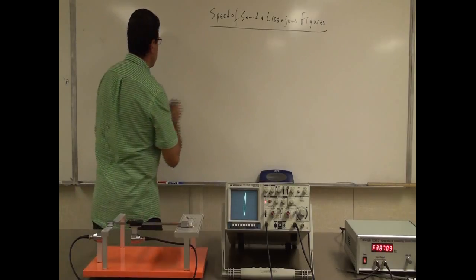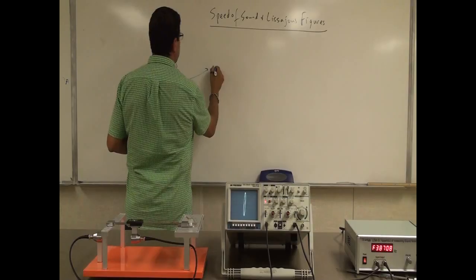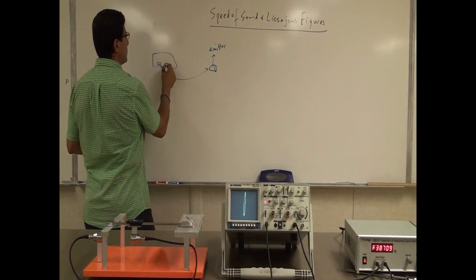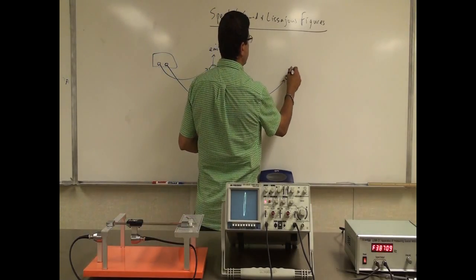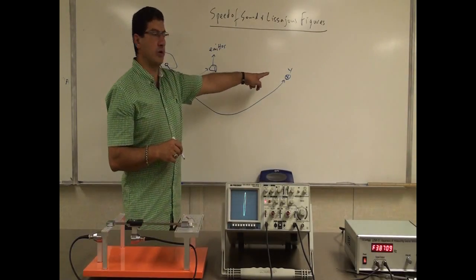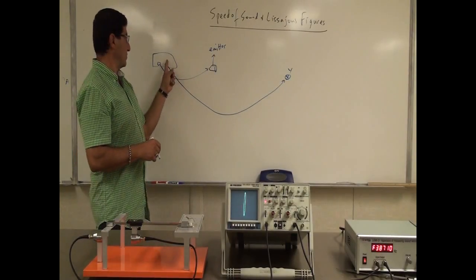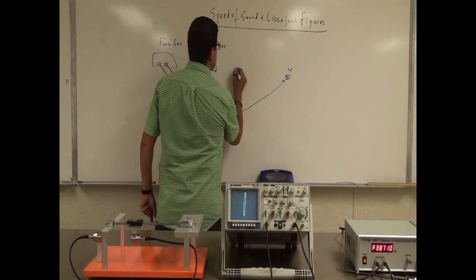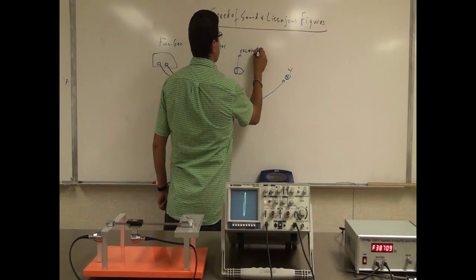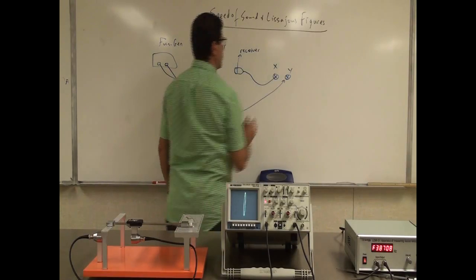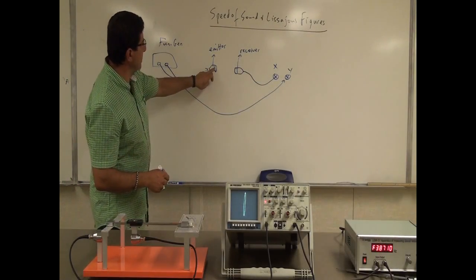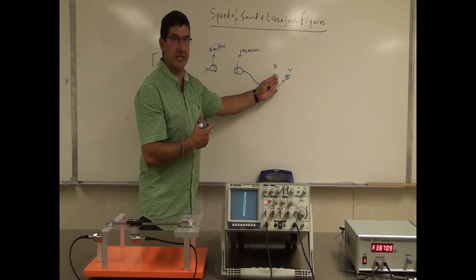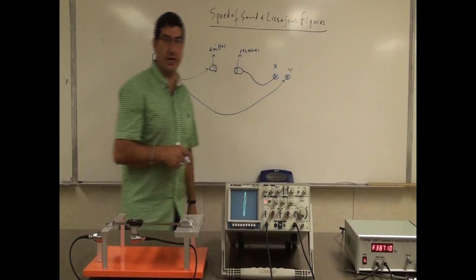Let me draw the schematic. The function generator has one output going to the emitter of the sound wave, and the other output goes into the Y input of the oscilloscope, which reads the original sound wave from the function generator. Then you have the receiver, with a wire from the receiver going into the X input of the oscilloscope.